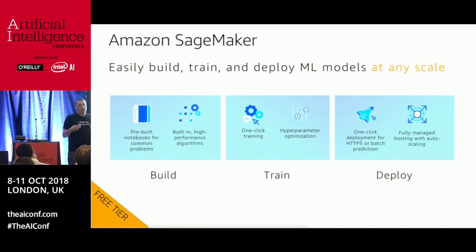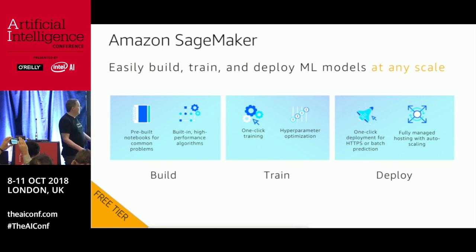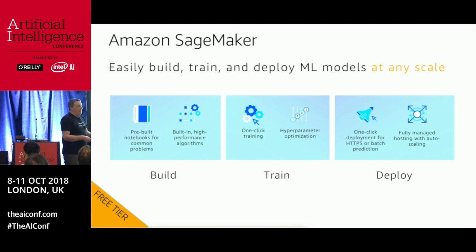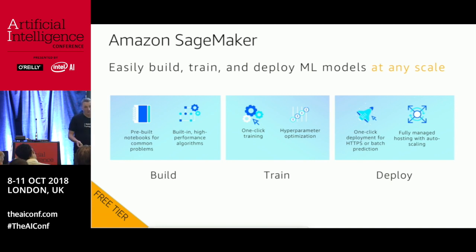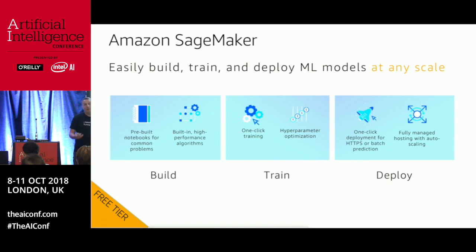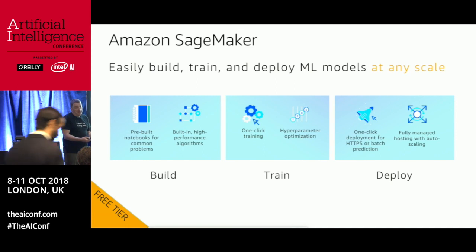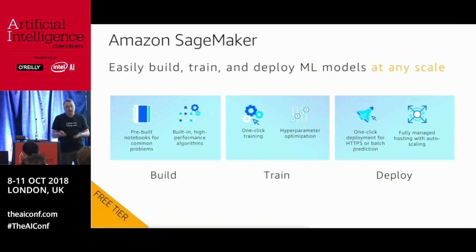The second big module is training — training with your dataset without touching a single server. It's literally a one-API-call thing: just ask SageMaker to fire up X instances of type Y and off it goes, fully managed. We'll talk about HPO, which is crucial for optimal performance. And when it comes to deploying, you can deploy an HTTPS endpoint backed by one or many web servers, fully managed, that will auto-scale just like EC2.